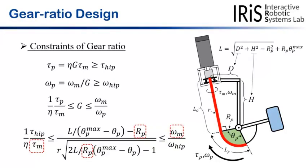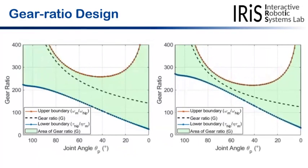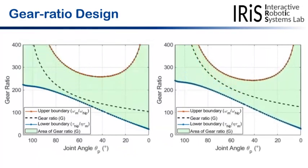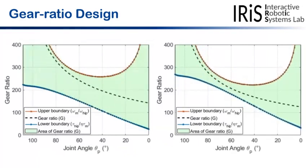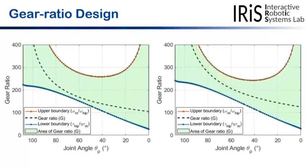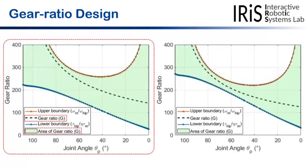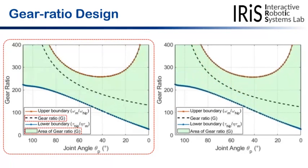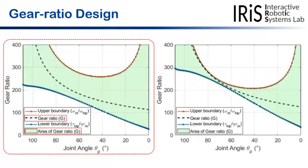motor torque, and angular velocity. Constraint area of gear ratio can be designed with the selected motor torque and angular velocity. If the pulley radius is adjusted and placed in this area, the requirement can be satisfied.